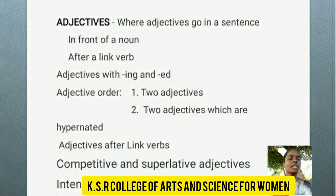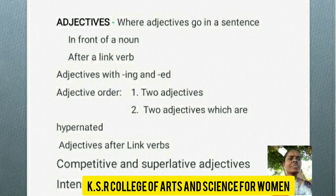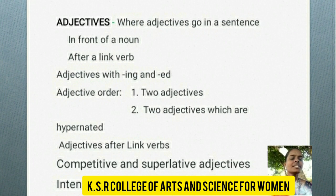We are going to learn about adjectives — where adjectives go in a sentence: in front of a noun, or after a link verb. Adjectives with -ing and -ed, adjective order, two adjectives with 'or', comparatives and superlatives, and intensive and strong adjectives. Thank you.